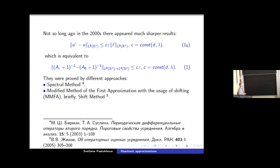And it's silent. This result was firstly proved by Birman and Suslina. This was reported here already today. And I remind you that this result was proved by Birman and Suslina by spectral method based on Floquet-Bloch representation of the resolvent of differential operator with periodic coefficients. And a little bit later, Zhikov proposed another method to prove such type estimate. This method can be called modified method of the first approximation with the usage of shifting. And briefly, it is often called simply shift method.